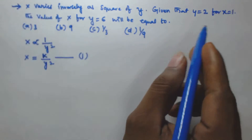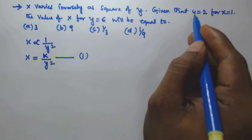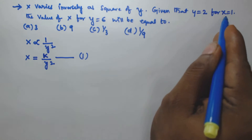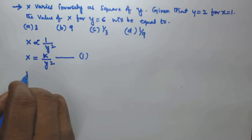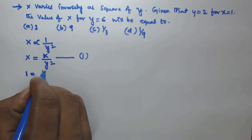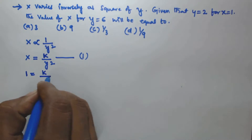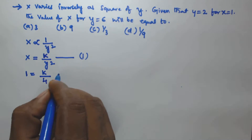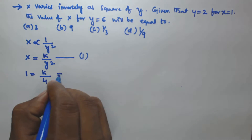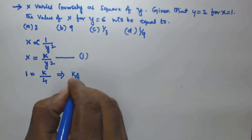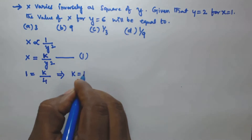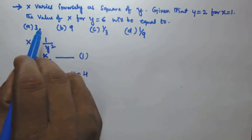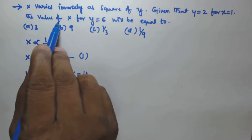It is given that y is equal to 2 for x is equal to 1. So we substitute these two values: x is equal to 1 and y is equal to 2. So 1 equals k by 2 squared, which is k by 4. From this equation we get k is equal to 4.